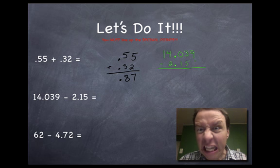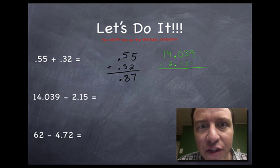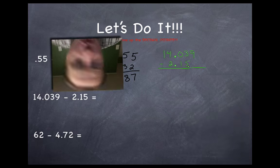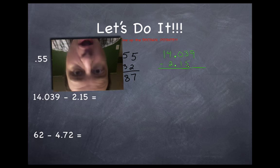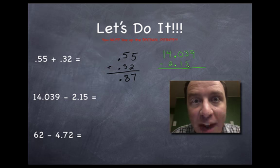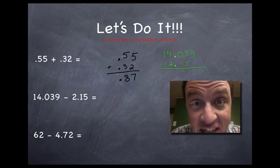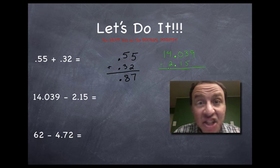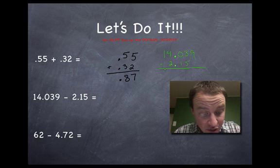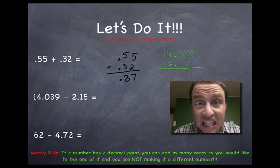Are you ready for the second important rule of decimals? It's a wacky one. Wow, wow, wow, wow. When you have a decimal, you can add as many zeros to the end as you want. What? That's right. You can add as many zeros to the end as you want. As many as you'd like.